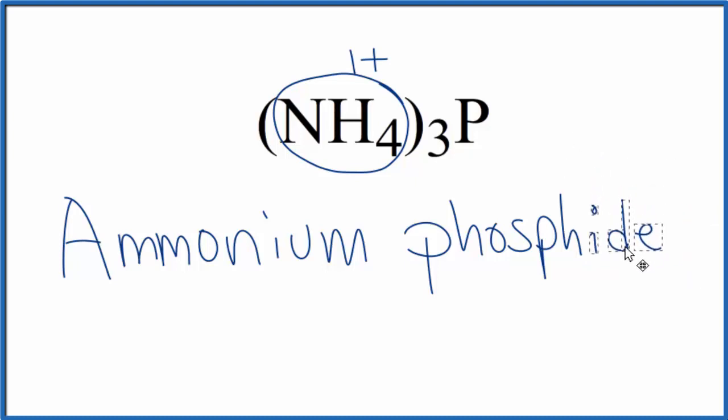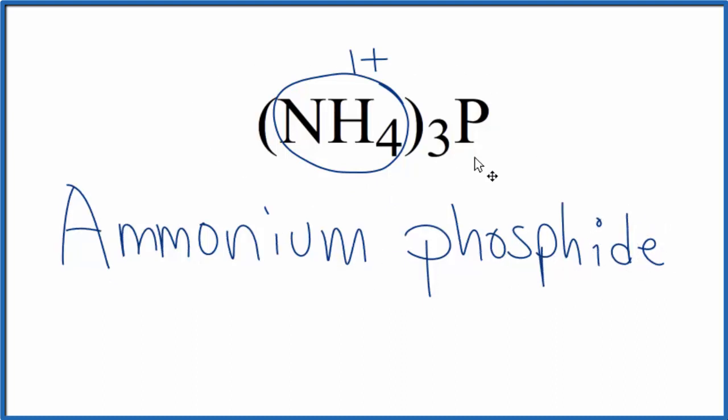So the name for (NH4)3P is ammonium phosphide. Even though we have all nonmetals here, this is considered an ionic compound. We have the ion here, this polyatomic ion, the ammonium ion.